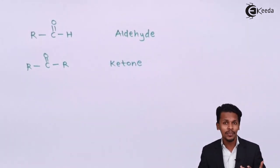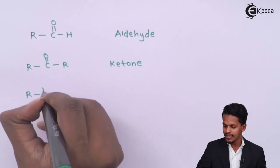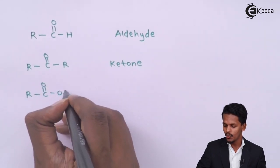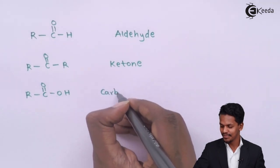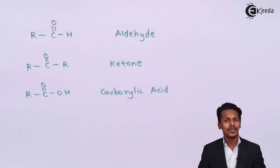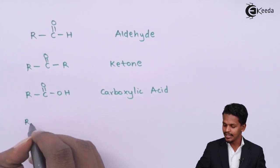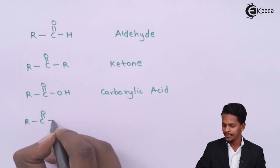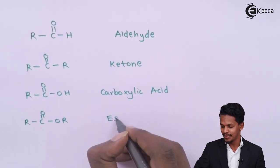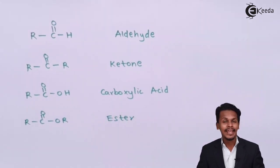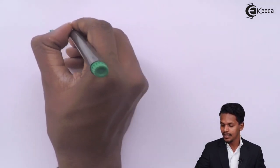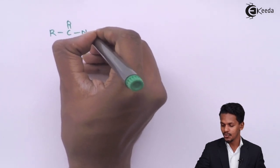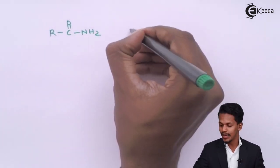Talking about another compound: if we have RC double bond O, OH — this is known as carboxylic acid. The next one is RC double bond O, OR — this is known as ester. And suppose what we have is RC double bond O, NH₂ — this is known as amide.